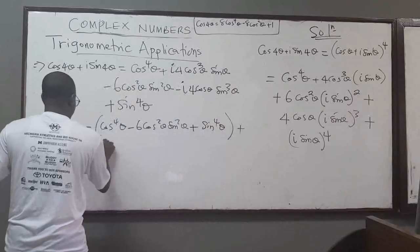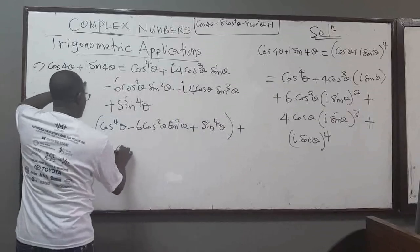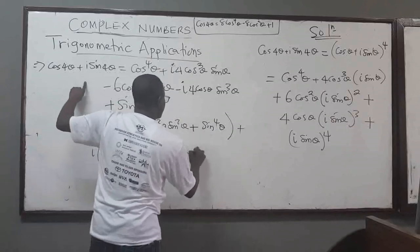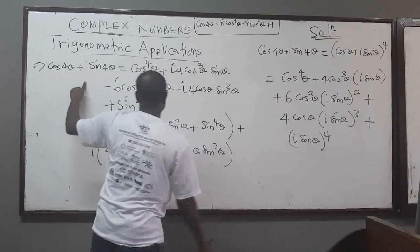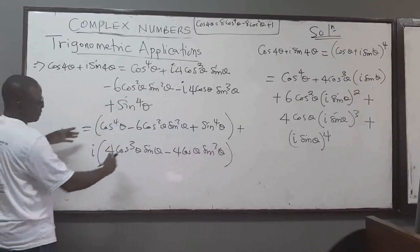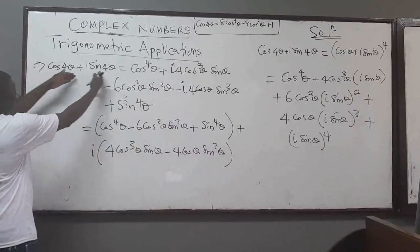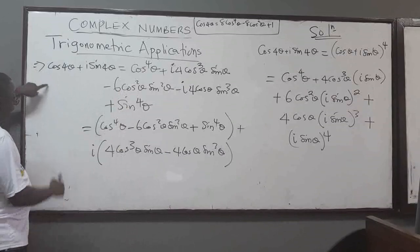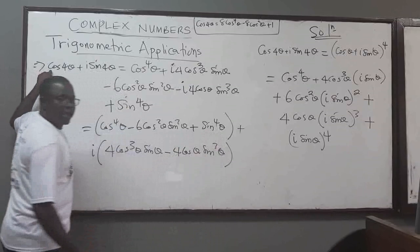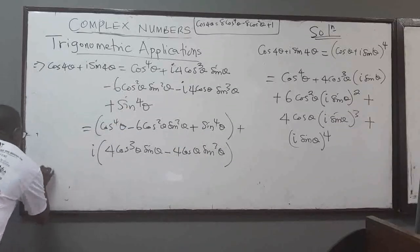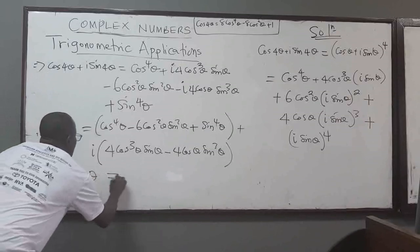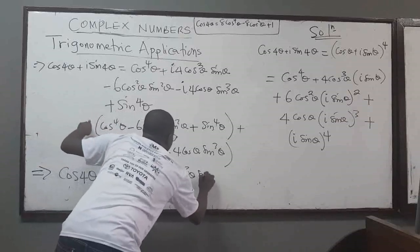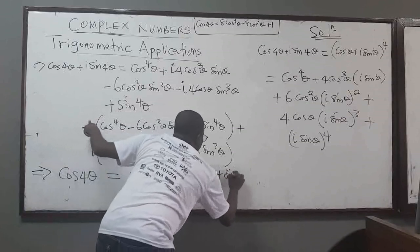We separate real and imaginary parts. Two complex numbers are equal when their real parts are equal and their imaginary parts are equal. So equating real parts on both sides, this implies that cos(4θ) equals the real part: cos⁴θ − 6cos²θ sin²θ + sin⁴θ.